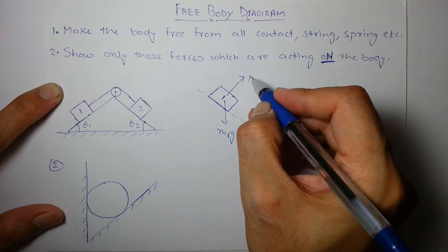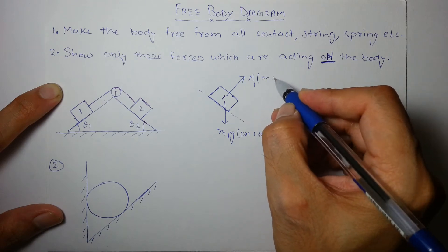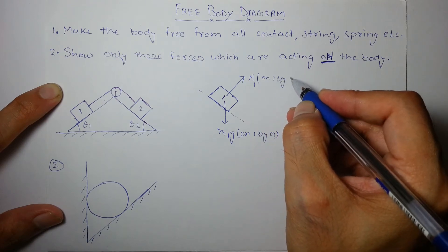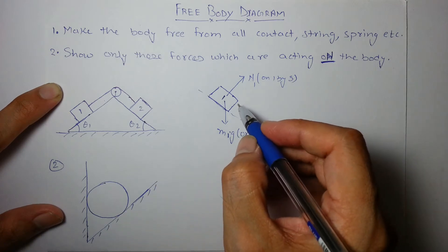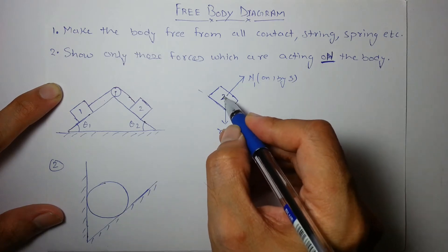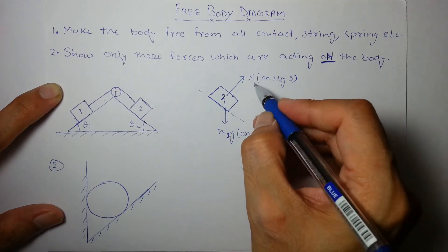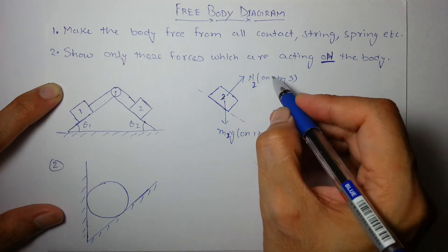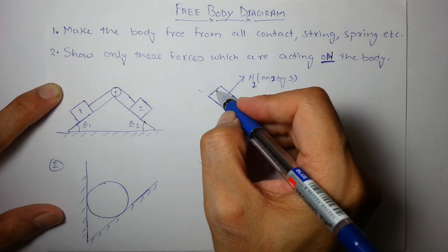And this is nothing but the diagram of block 2. So it should be n2g and n2 on 2, and there's one more tension which is on 2 by string, by rope. Let's say R, this is the free body diagram of block 2.